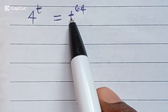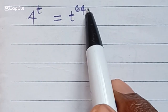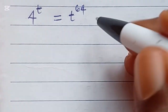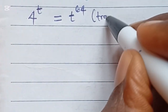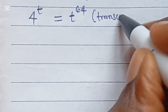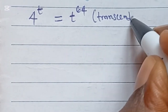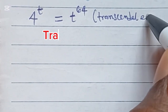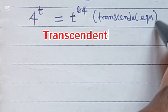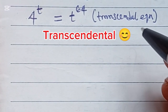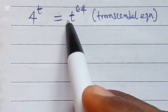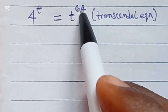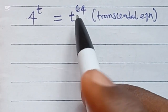4 to the power of t is equal to t to the power of 64. This is an example of a transcendental equation, and one of the best approaches to use in this case is to group the unknowns and group the constants.